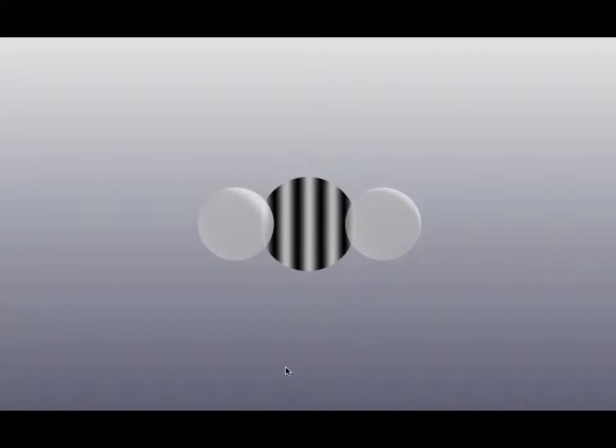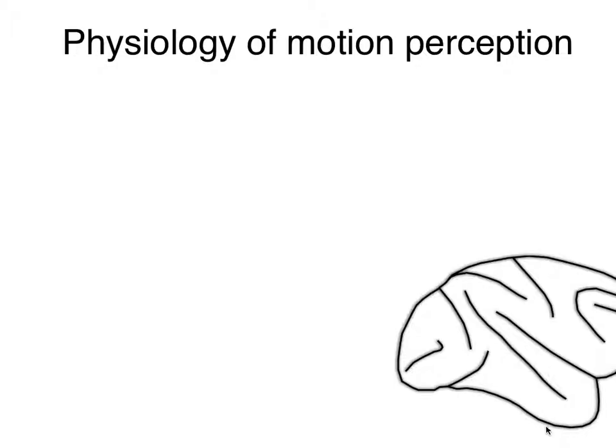When an object is moving in three dimensions, we can infer — we can back out — what the object's motion is by comparing these velocity signals on the back of the two eyes. To get us started, I will orient us to the physiology, the neural architecture that underlies motion perception. With my apologies to over a hundred years of research, this will be a slide that summarizes all that research very briefly.